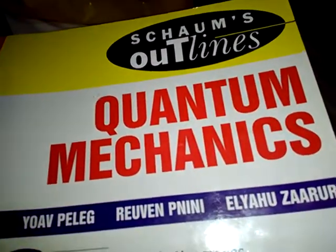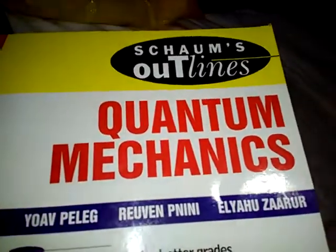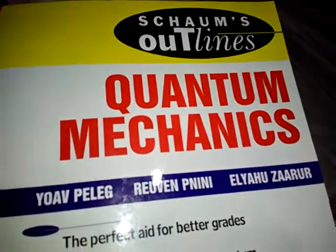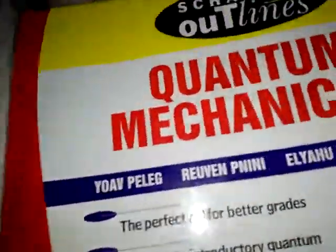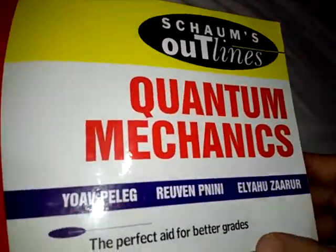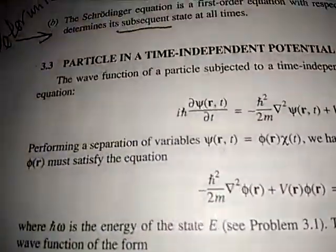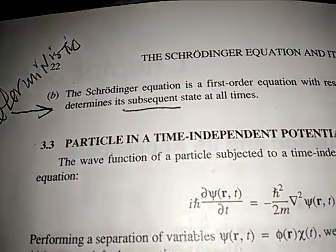Okie dokie. Today we're going to be looking at Shams Outline Series book on quantum mechanics. So here it is right here. And we're just going to look at one little page. This will be one of my shortest lectures ever. And that page is right here at page 22.